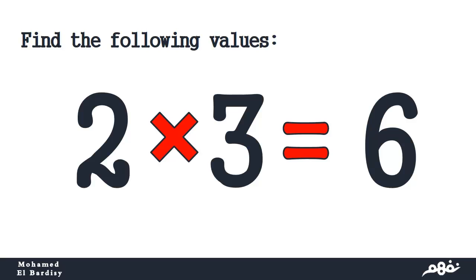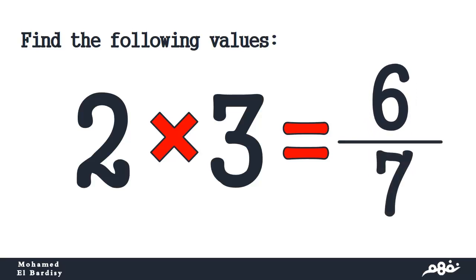Find the following values: You know that 2 multiplied by 3 equals 6. Yes, it is an easy operation. So if I ask you another task to minimize this 6, how can you minimize this 6 to make it 6 over 7?